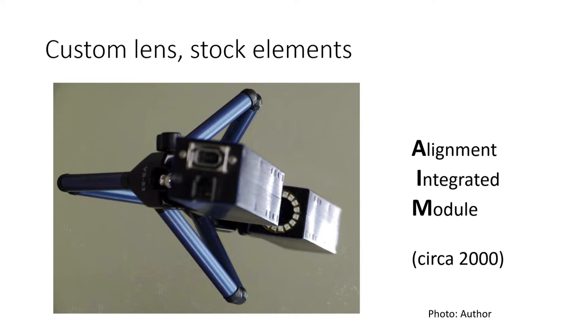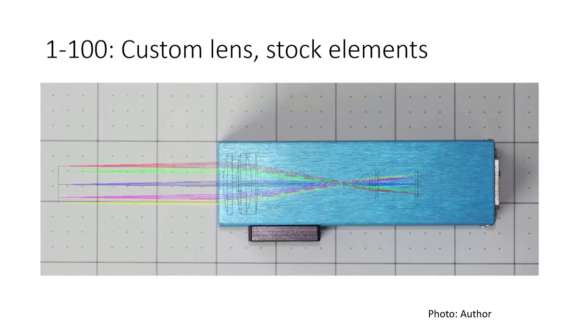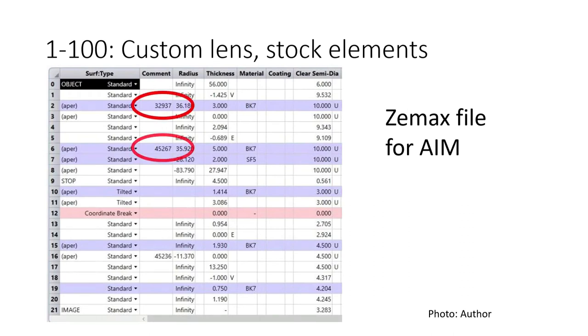You can make a custom lens from stock elements. This is really successful at a large number of quantities, actually. This is what I call an alignment integrated module from about 17 years ago. It includes a camera sensor, a lens, and an illumination system. Here it is inside view, and there's the optical system laid on top of it. Here's a Zemax file. The point here is all of those lenses are catalog lenses. And yet we made a really high-performing lens system from them.